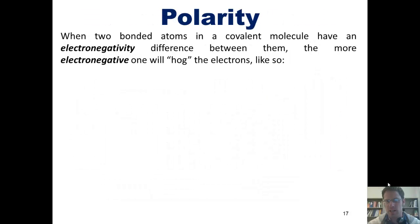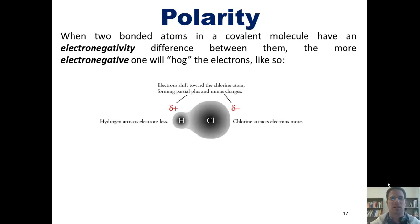This leads beautifully into talking about this very important subject, polarity. When two bonded atoms in a covalent molecule, that is, a molecule in which there's a sharing of electrons, have an electronegativity difference between them, the more electronegative one will hog the electrons to itself like this. In this example, hydrogen chloride or hydrochloric acid, both of these elements are nonmetals. Thus, when they form a bond, it is a shared electron bond or a covalent bond.